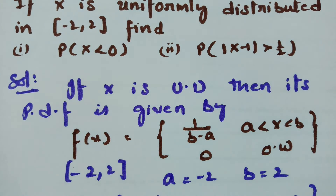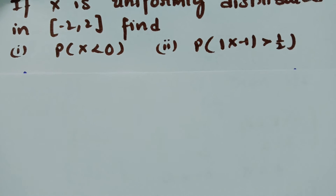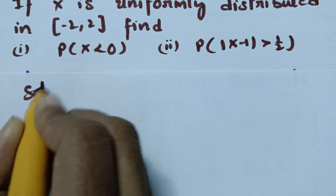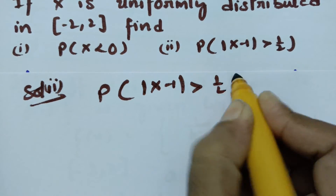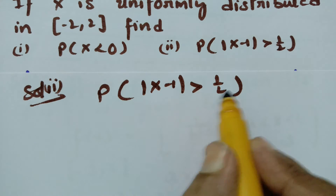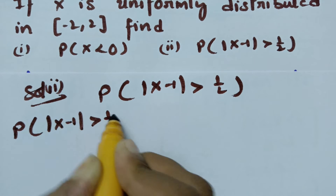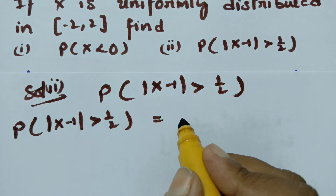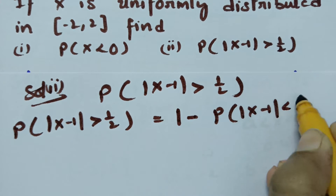Now I will show you the probability of modulus of x minus 1 greater than half. Instead of finding this directly, as the total probability is 1, I will compute 1 minus probability of modulus of x minus 1 less than half.